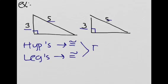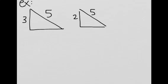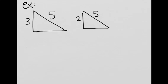So that means by H-L, these two triangles are congruent. Now let's look at this triangle. We see that the hypotenuses are congruent, but we don't see that the legs are congruent. Does that mean these triangles are not congruent? Not necessarily.